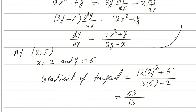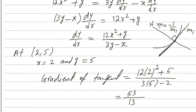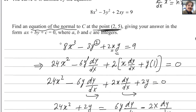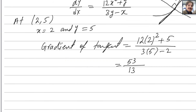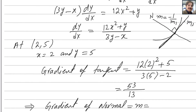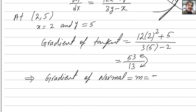The tangent is a line that touches the curve at one point — here at (2, 5) with gradient m₁ = 53/13. The normal line is always perpendicular to the tangent. The product of their gradients is always -1, so the gradient of the normal is -1/m₁. Therefore, gradient of normal = -13/53.